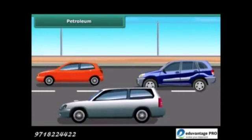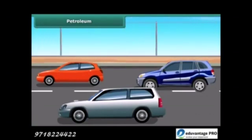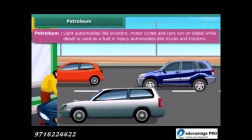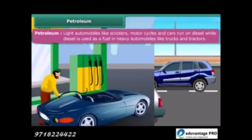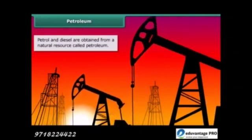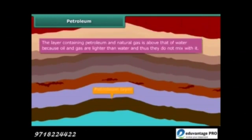I know you all are fond of luxury cars and vehicles, but do you know which fuel they run on? Most of these run on either petrol, diesel or compressed natural gas, also known as CNG. Petrol and diesel are obtained from a natural resource called petroleum. Petroleum and natural gas deposits exist as a layer above the water layer.